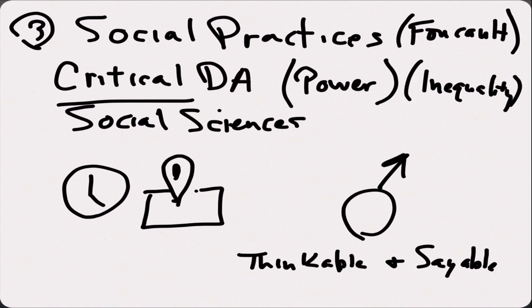So, really, this notion of social practices is about critical power dynamics, inequalities, those kinds of things in producing what is thinkable and sayable at any one time. So, doing a kind of analysis of these practices involves looking at lots of different texts and showing how these things are temporally and geographically located.